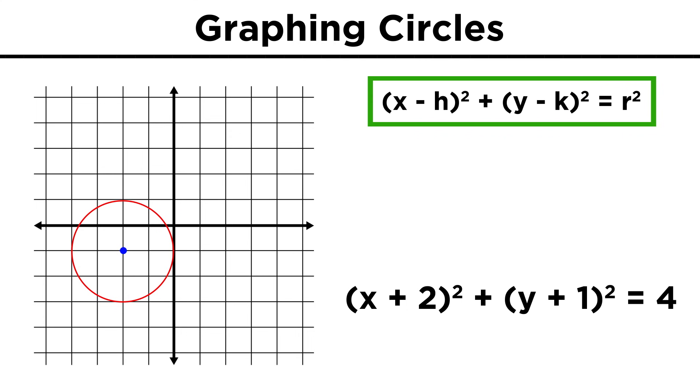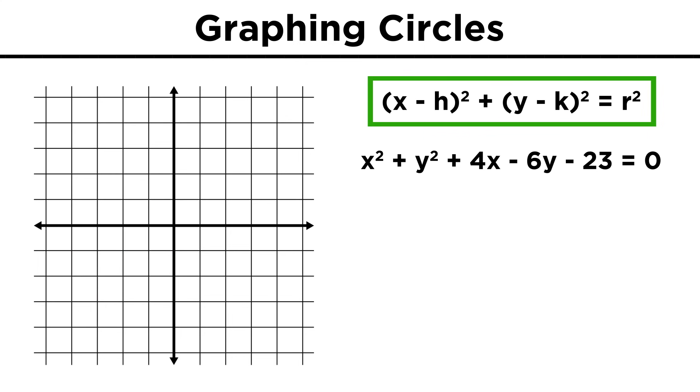A lot of circles will have graphs and equations that are this simple, but sometimes we have to get clever. Say we have something like x squared plus y squared plus four x minus six y minus twenty-three. If we look carefully, we will notice that this can be rearranged to put into standard form. We can just bring twenty-three to the other side, and then group the x and y terms separately.